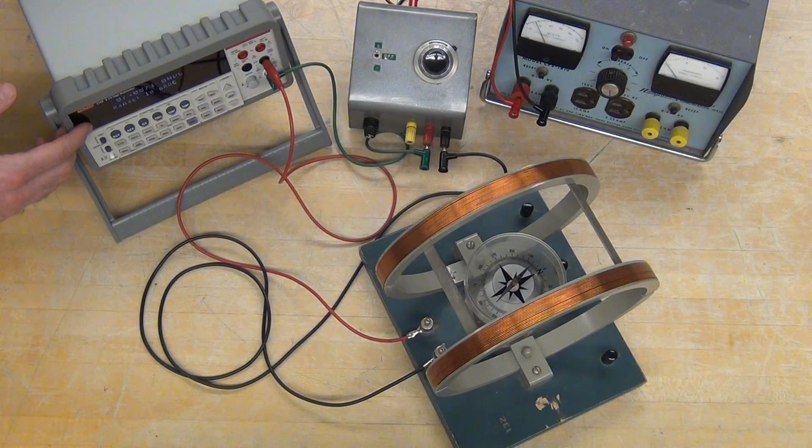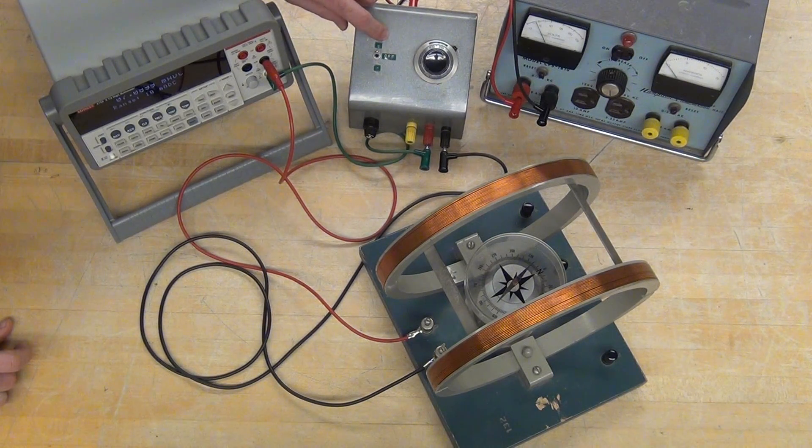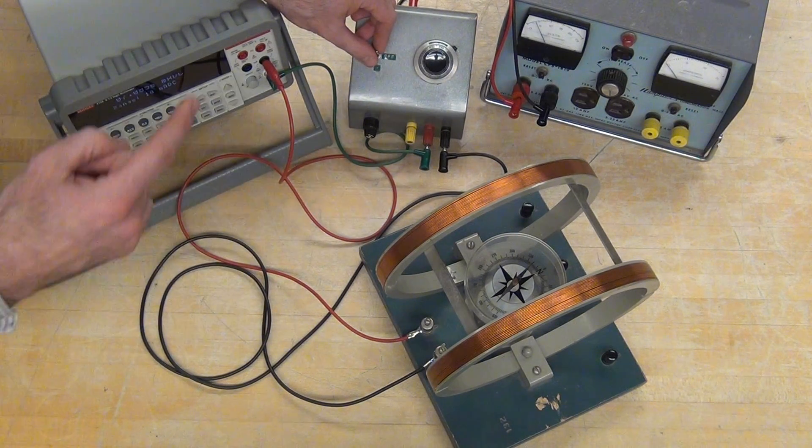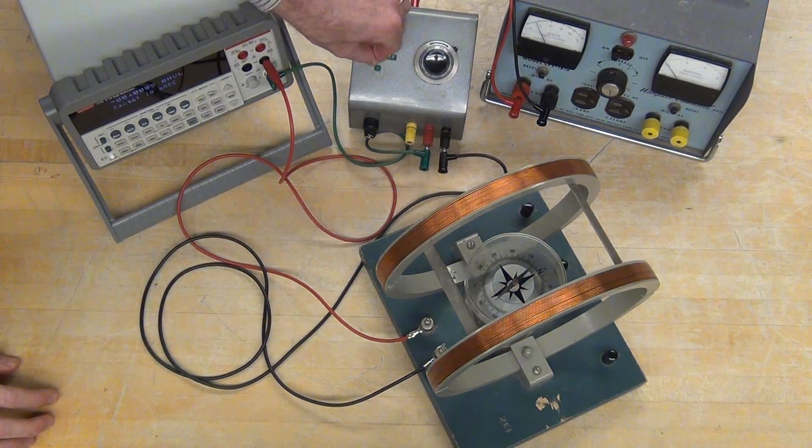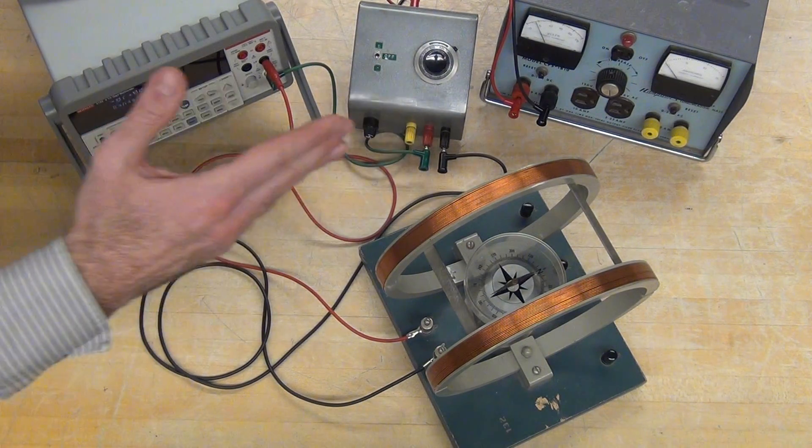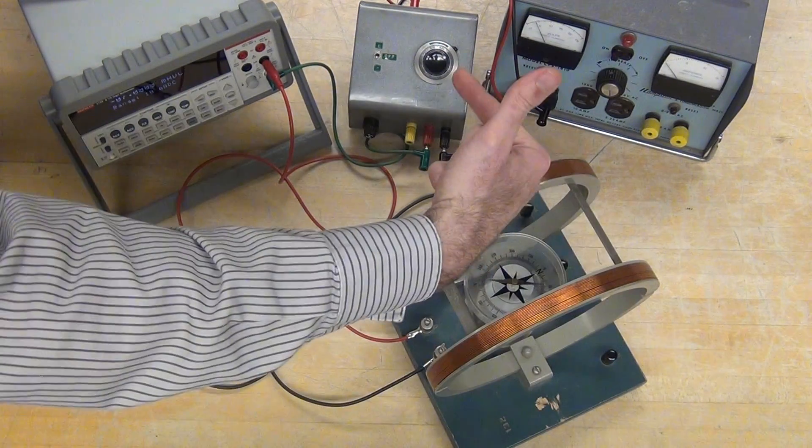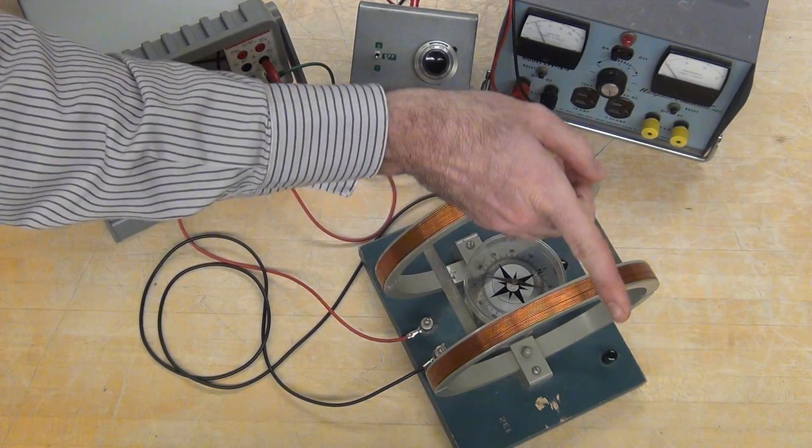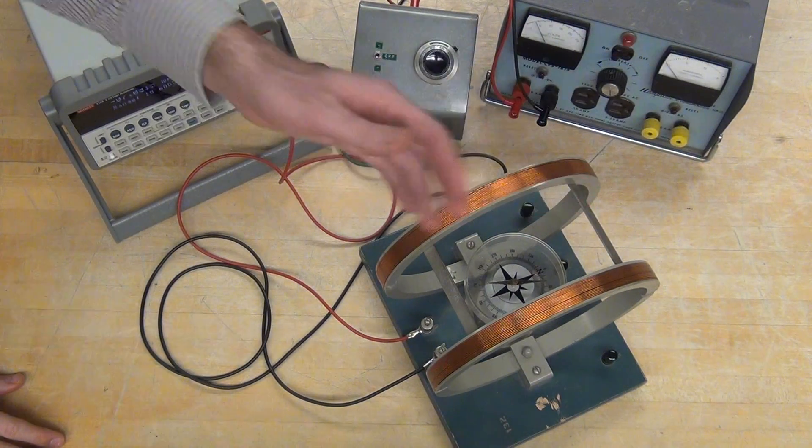And then the nice thing about the voltage dividing box, it actually allows you to switch. And so now we can send the current through the other direction. Instead of the coil pushing the needle that way, now it's pushing it that way.